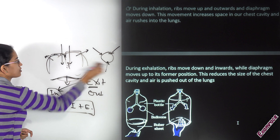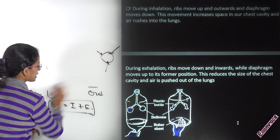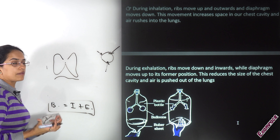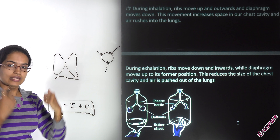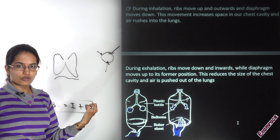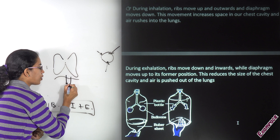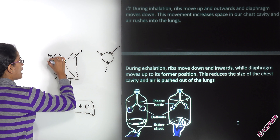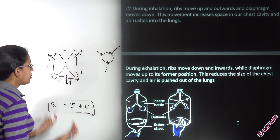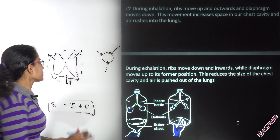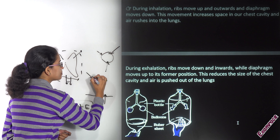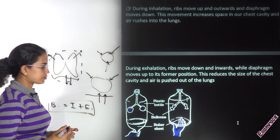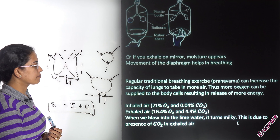To recap: the lungs are connected through the windpipe and enclosed in the chest cavity. Below the lungs is the diaphragm. When inhaling, the diaphragm moves down and the ribs move outward and upward, increasing capacity. When exhaling, the diaphragm moves up and ribs go inside and downward, decreasing capacity. This is an involuntary process.